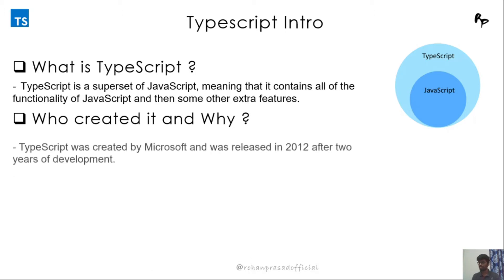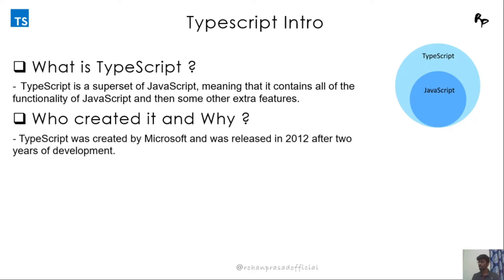Microsoft created TypeScript in 2012 after two years of development. They created it because they were building very large, complex applications and were having a lot of trouble handling code with JavaScript at such a large scale. So they built TypeScript for their internal teams at first, for their own projects.